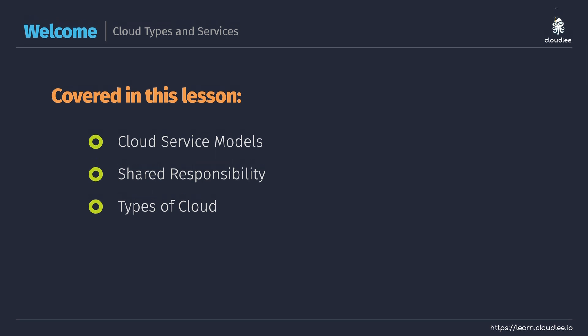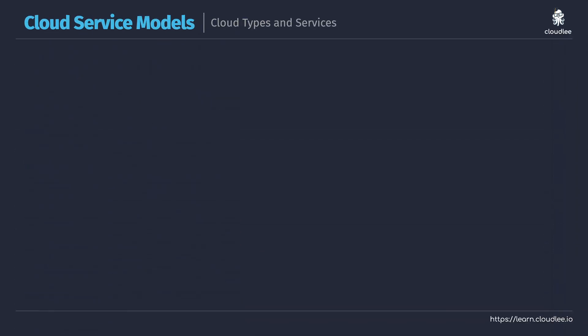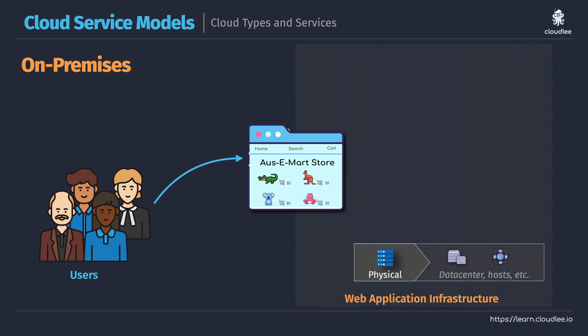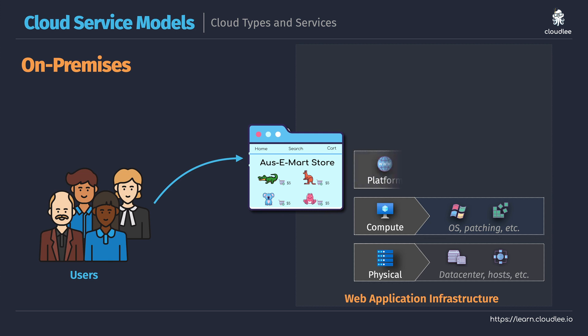To help understand the three main cloud service models, let's walk through an example. Let's say we've got our Ozymart web application, and currently we've got that hosted on-premises. To host that web application, just like many other web applications, there's a range of different common things that we need. For the infrastructure, we're probably going to have some physical infrastructure — physical hosts, storage, networking, and so on. To host that web application, we're going to be running some sort of server, like Windows or Linux.